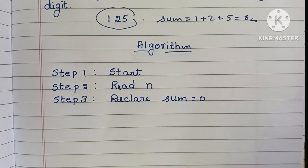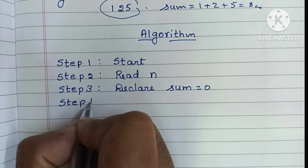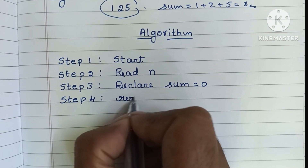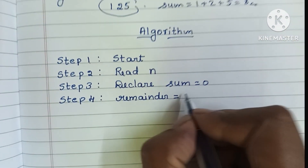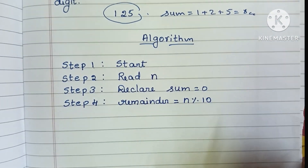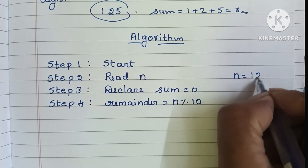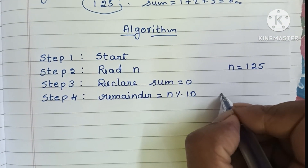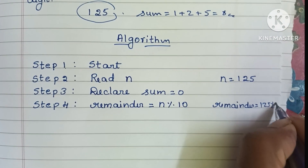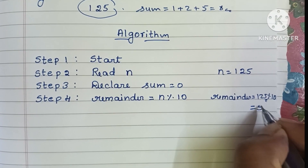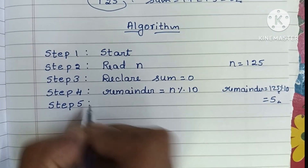In step 4, we start the calculations. We find the remainder using the formula: remainder = N mod 10. For example, to find the sum of digits of 125, the remainder is 125 mod 10, which gives remainder equal to 5.